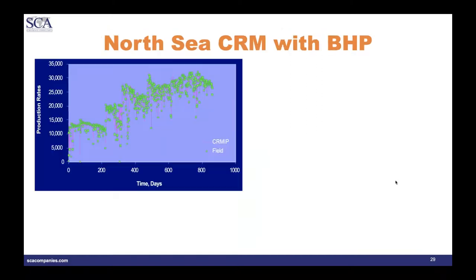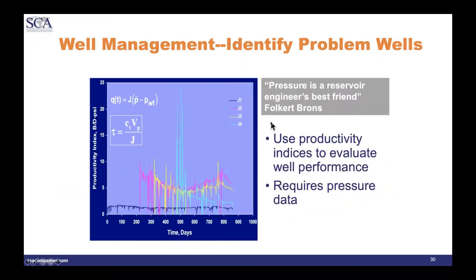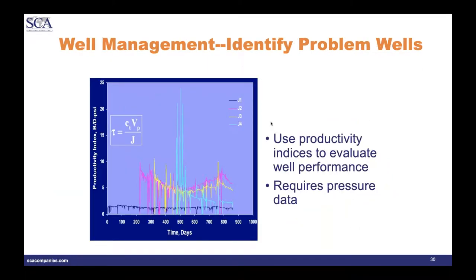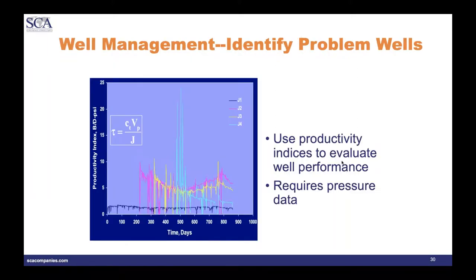When we redo the fit with bottom-hole pressures, the fits are visually much better, and the plot of data versus fit is remarkable — regression coefficient in excess of 0.9. When we have this information, it is possible to separate the effects in the time constant.